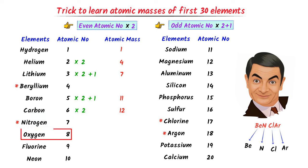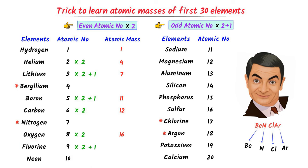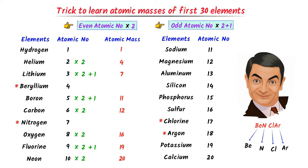The atomic number of oxygen is 8. I multiply it by 2. I get 16. The atomic number of fluorine is 9. I write 9 × 2 + 1. I get 19. The atomic number of neon is 10. I write 10 × 2. I get 20.